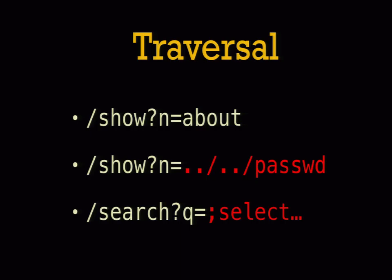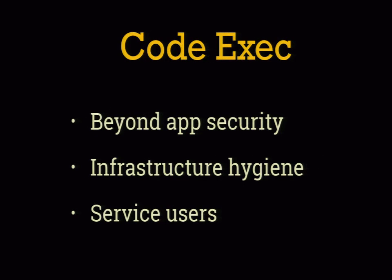With traversal attacks, you have to rely on the principle of least access — any secrets that the process doesn't have access to, the attacker can't get either. We have layers of defense: file permissions, chroots, or even Linux containers. You'll want to restrict what the runtime of the application can access. The most common case: TLS keys are only readable by root. Apache starts up, reads the key as root, then drops privileges, so no directory traversal attack can reach that TLS key.